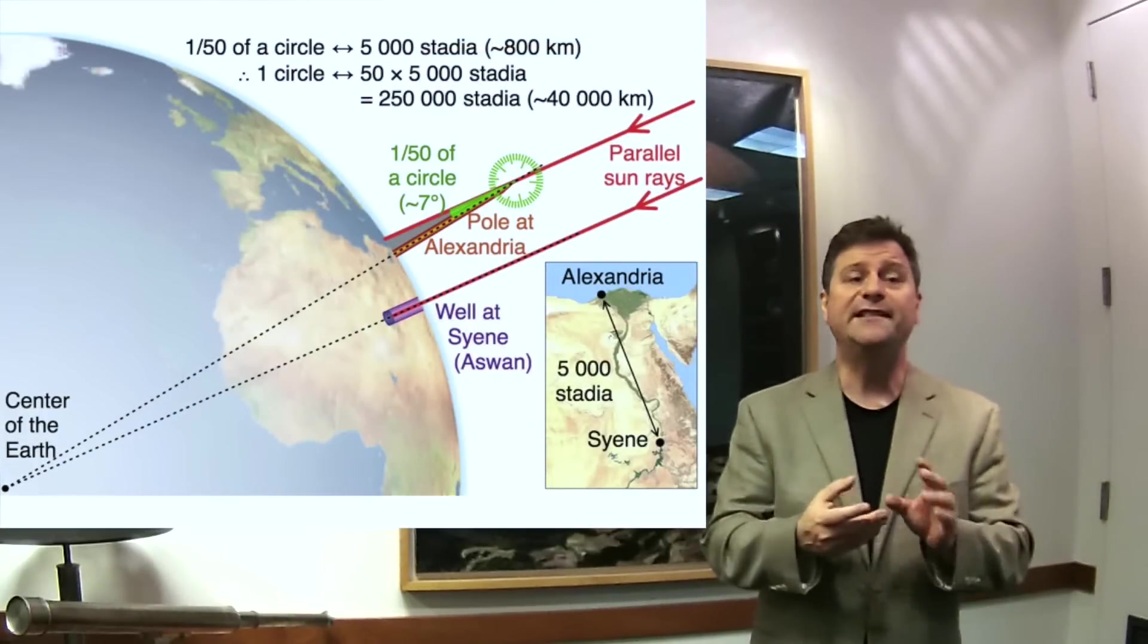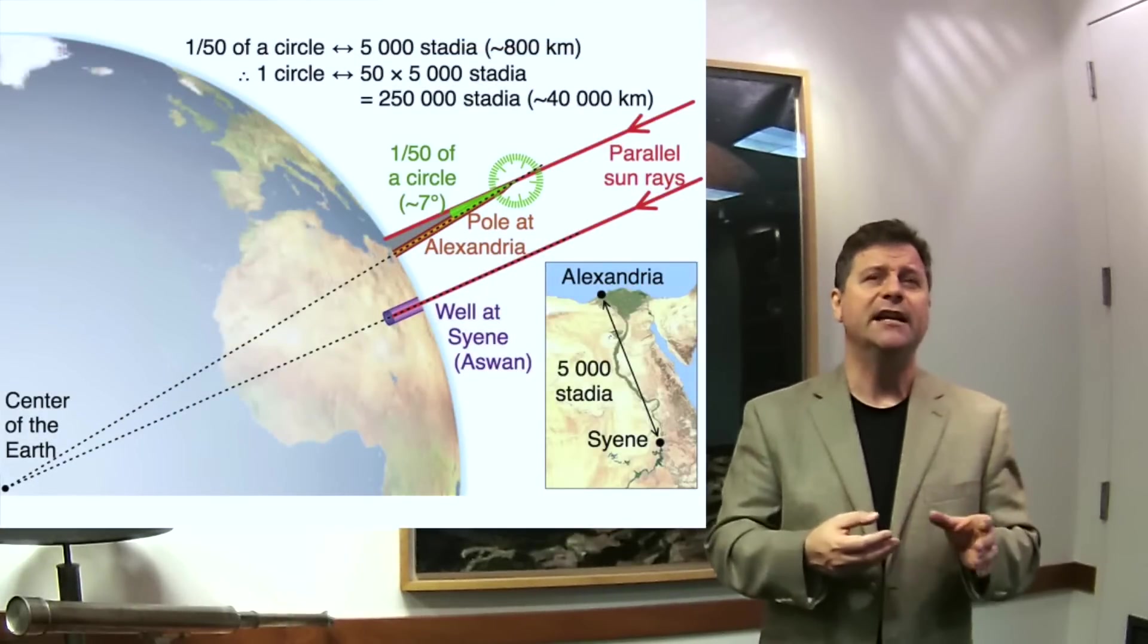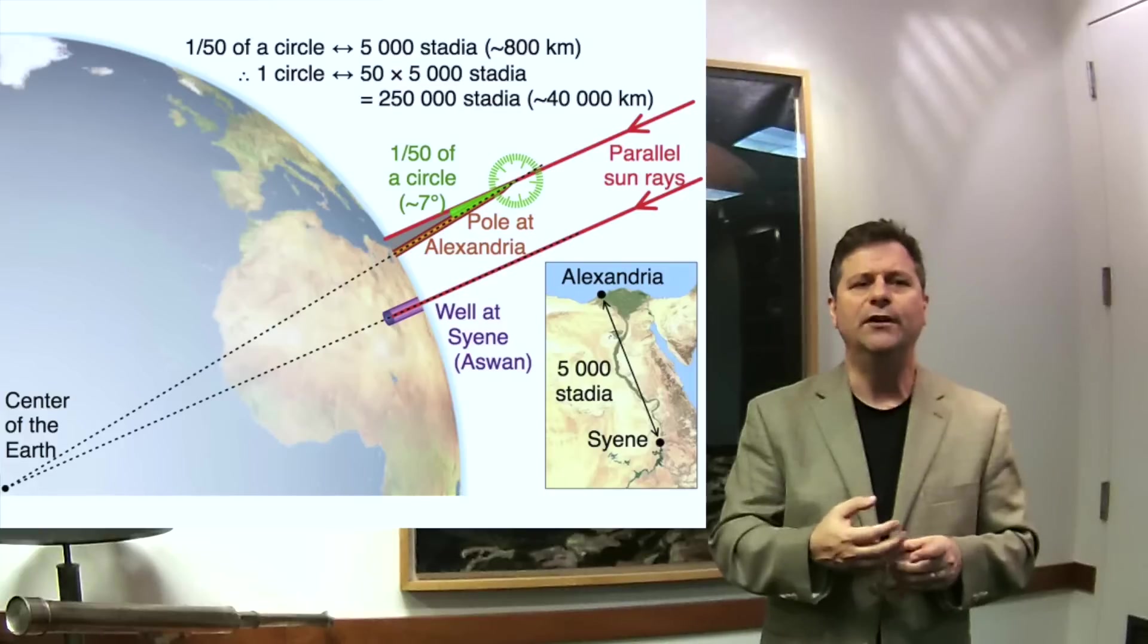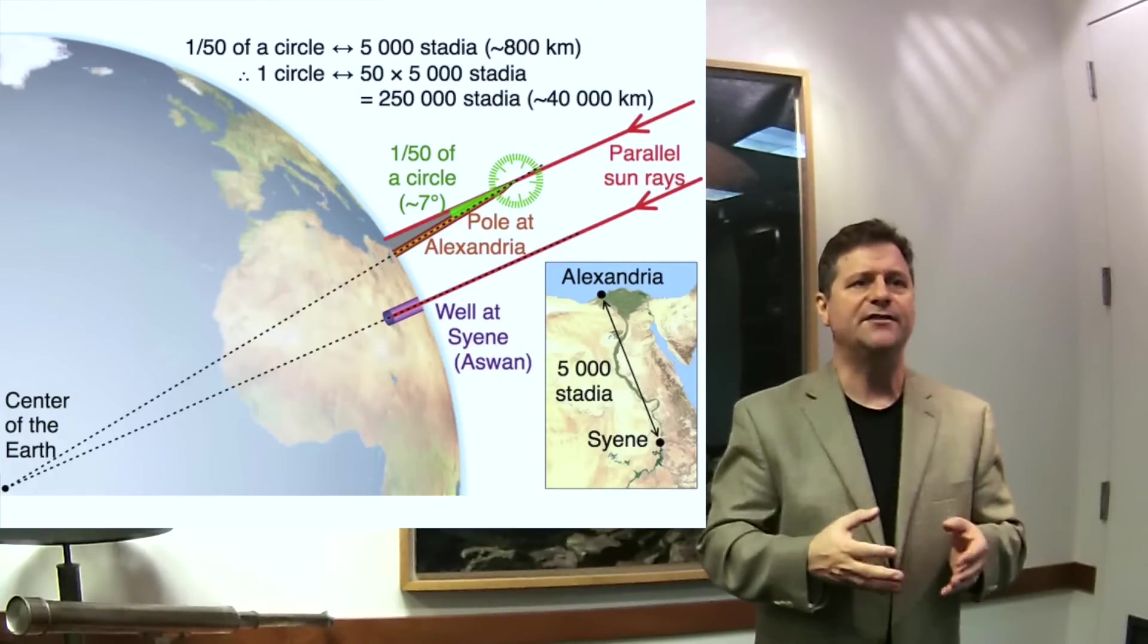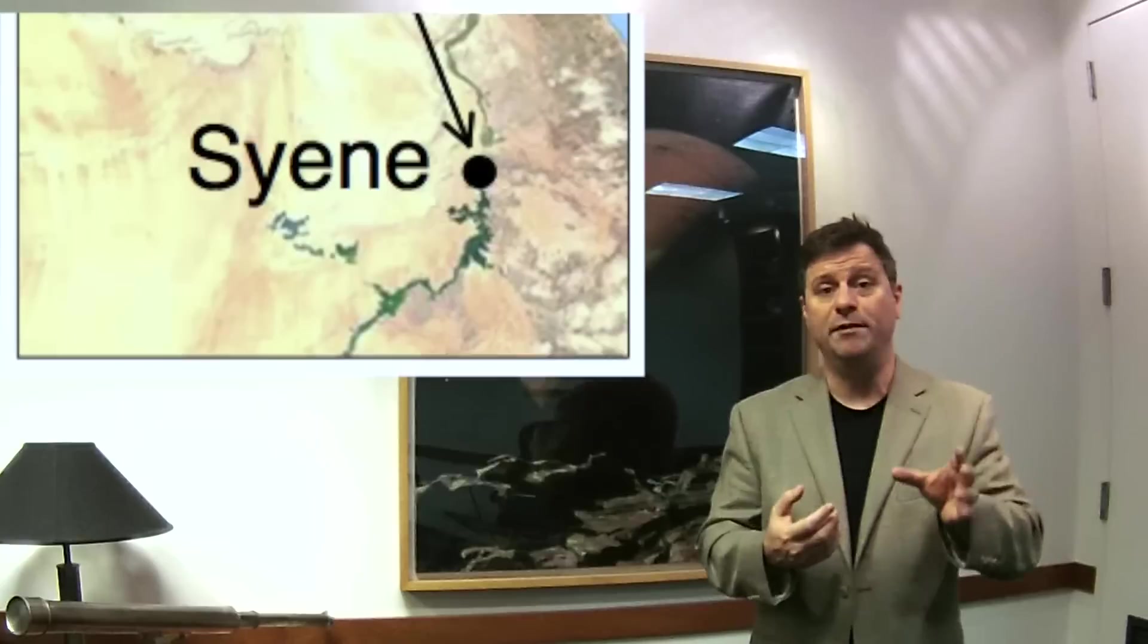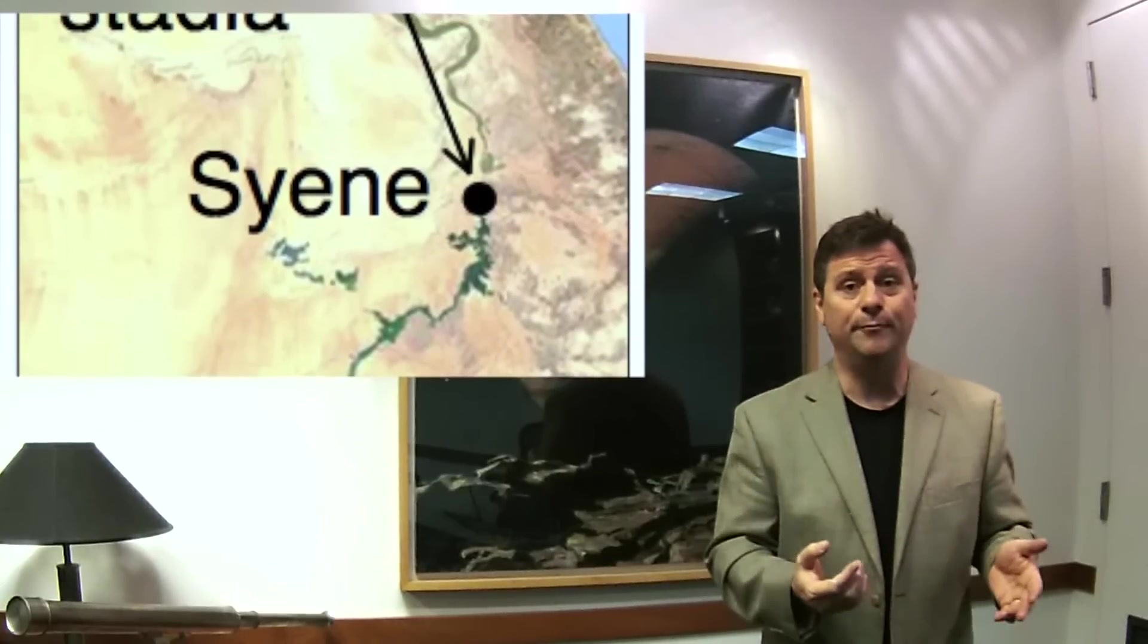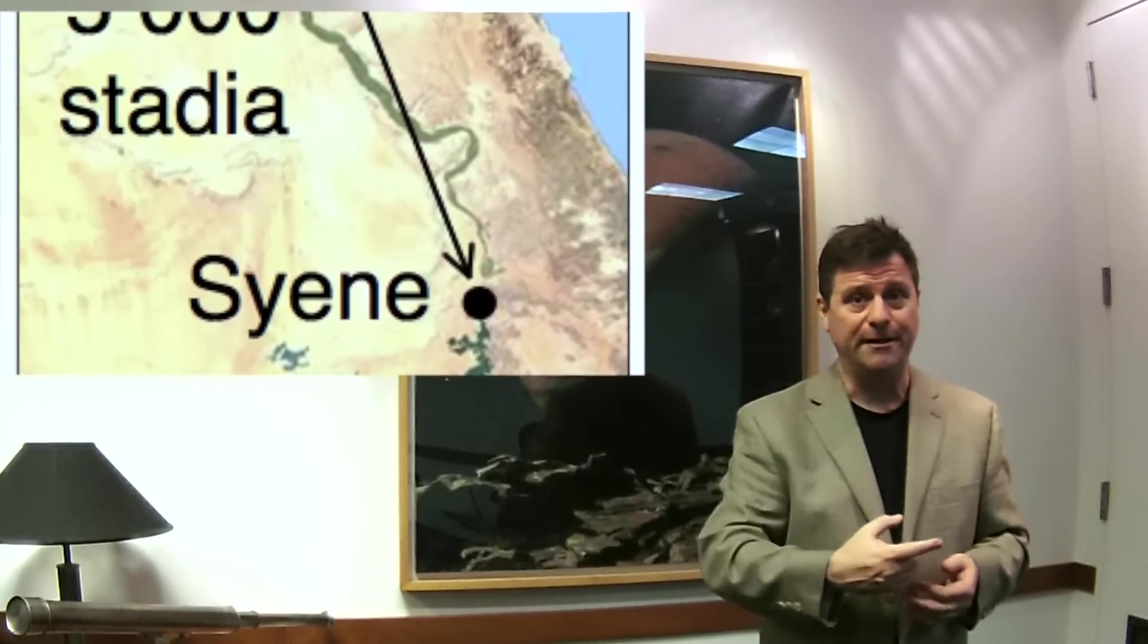And he also found that the distance between Alexandria and Syene was, he used a particular measuring unit called a stadia. A stadia is about 0.6 kilometers, so it's a little bit less than a kilometer. So if the distance between Alexandria and Syene could be measured, and of course, back in 200 BC, there's only one way to do it. You had to get somebody to walk it.